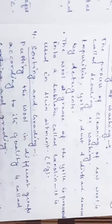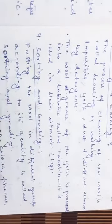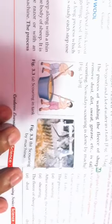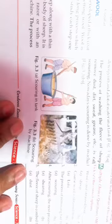Scouring is done to remove dirt, dust, sweat, and grease. Nowadays scouring is done by machines. The diagrams show both traditional and machine methods. You can see two people washing the fleece of the sheep in a tank, and the second method being done by machine.